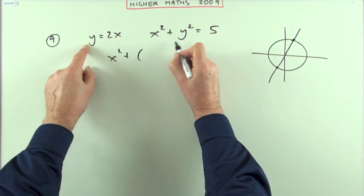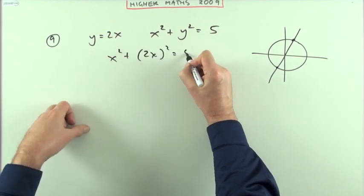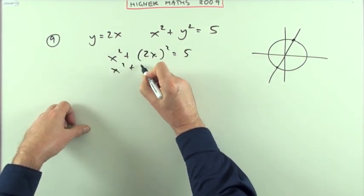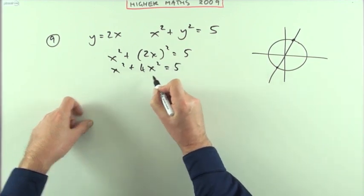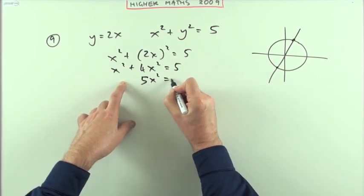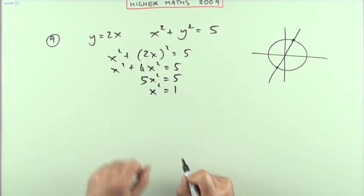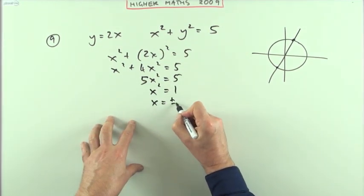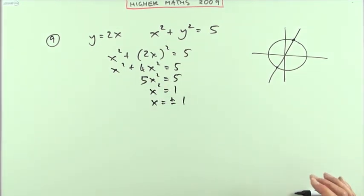So x squared plus, instead of y, I write 2x all squared. That'll be 4x squared. Adding up is 5x squared, you can see the answer already. Take the 5 across and divide, it's 1, square root plus or minus 1. So it was, in fact, the answer A.